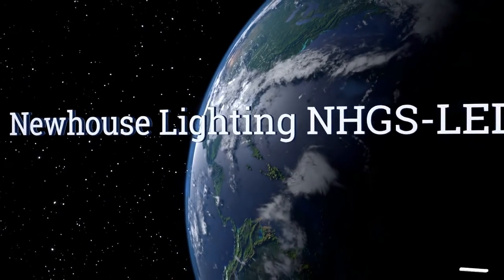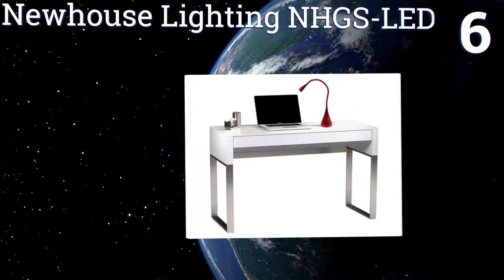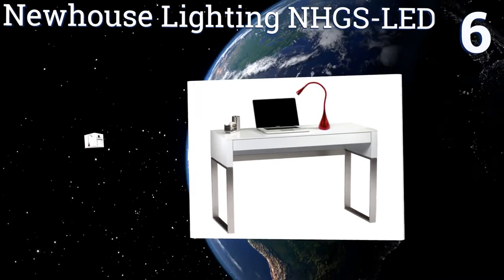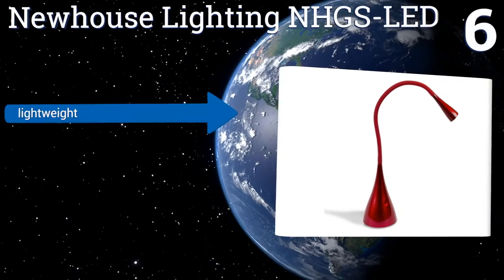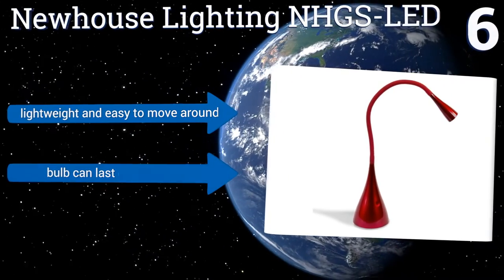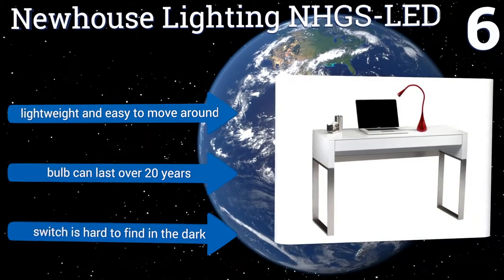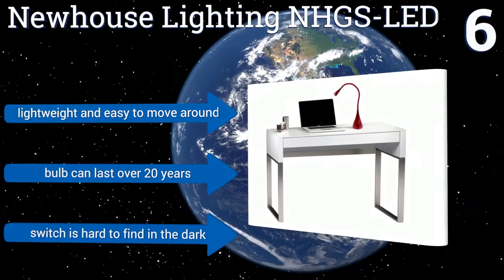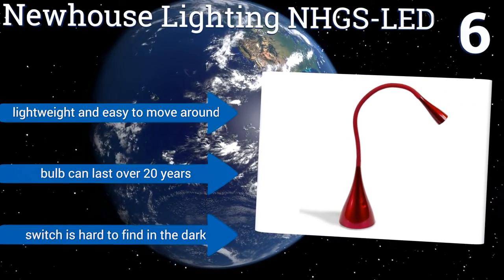Moving up our list to number 6, the innovative Newhouse Lighting NHGS LED can be bent, twisted, contorted, and curled any way you like without losing its shape or stability. It's available in black, red, or white, and also makes a striking bookcase spotlight. It's lightweight and easy to move around, and the bulb can last for over 20 years. However, the switch is hard to find in the dark.